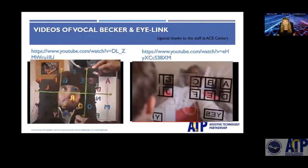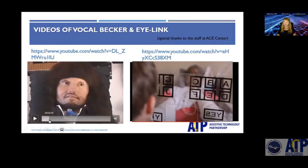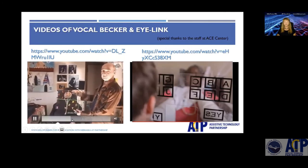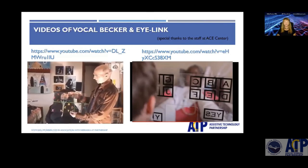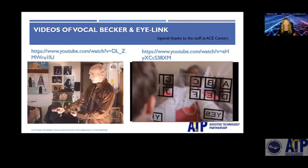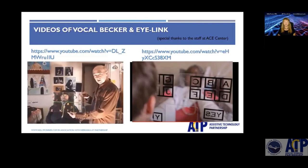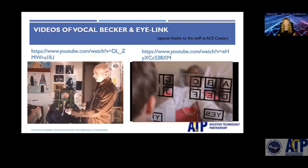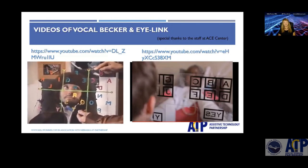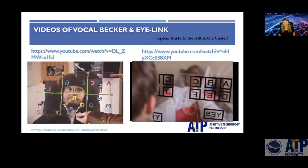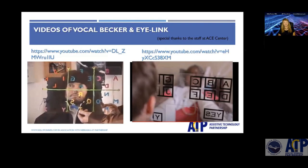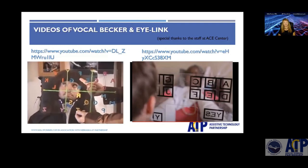Jason uses this system both to talk and write. He took a grid of six squares, put four letters in each square — that's 24, with Y and Z in the corner. So every letter has two eye movements: the first takes you to the square, the second to the letter in the square. He demonstrates spelling D-O-G: first looking to the square containing D, then to D; then to the square with O, then O; then to the square with G, then G — spelling 'dog.'